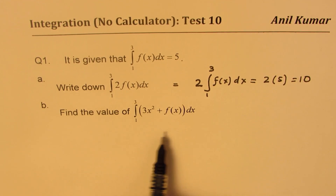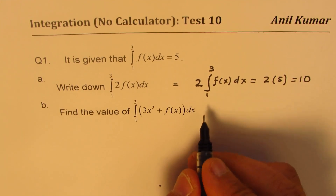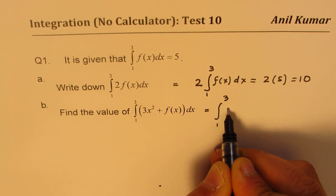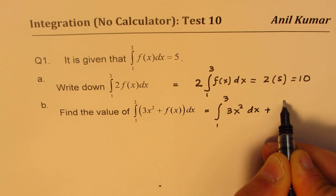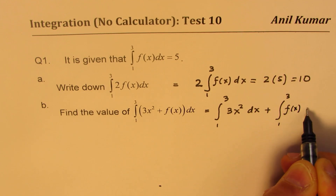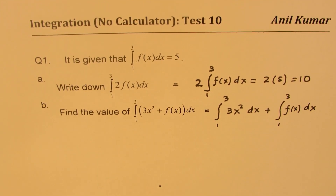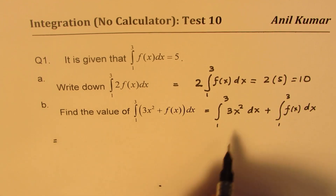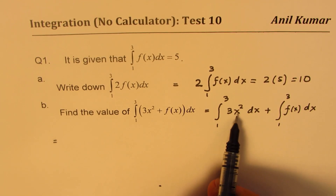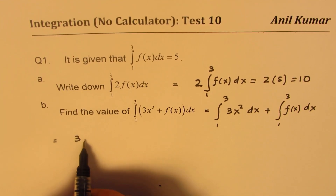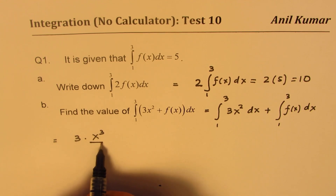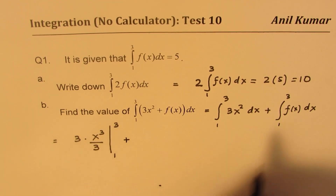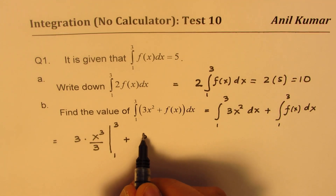In part B, we can rewrite this definite integral as a sum of integrals. We write this as the integral from 1 to 3 of 3x² dx, plus the integral from 1 to 3 of f(x) dx. To evaluate the first part we can use anti-derivatives, rewriting it as the anti-derivative of 3x², which gives us 3 times x³ over 3, evaluated from 1 to 3. The second part we already know is equal to 5.